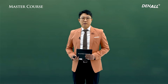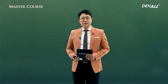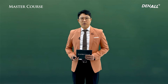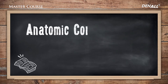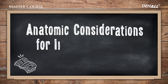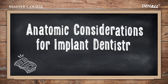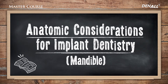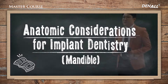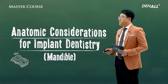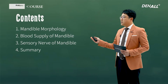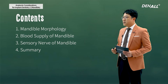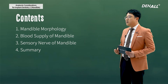In this lecture, we are going to talk about anatomic considerations for implant placement. First, the mandible. Today we are going to talk about the anatomic mandible, primarily three things.